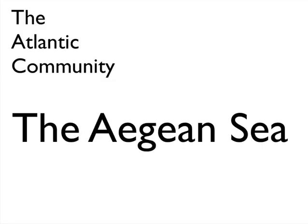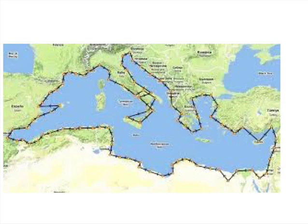The Aegean Sea is part of the Mediterranean, so we start with the Mediterranean. Here in front of you, you see the outline of the Mediterranean Sea. One part of that Mediterranean Sea is going to be called the Aegean Sea.